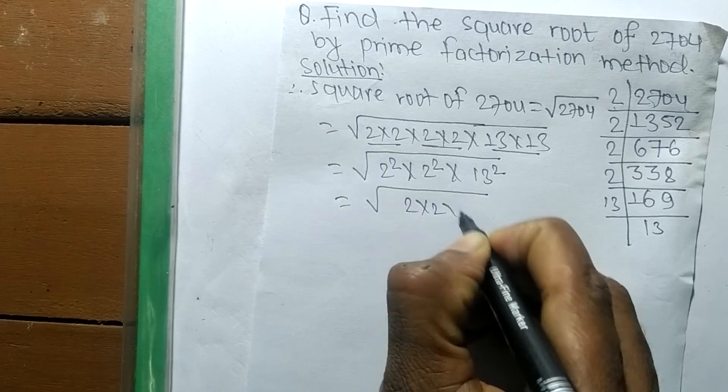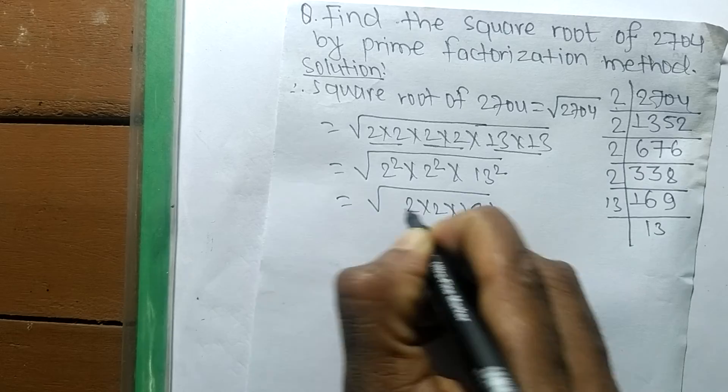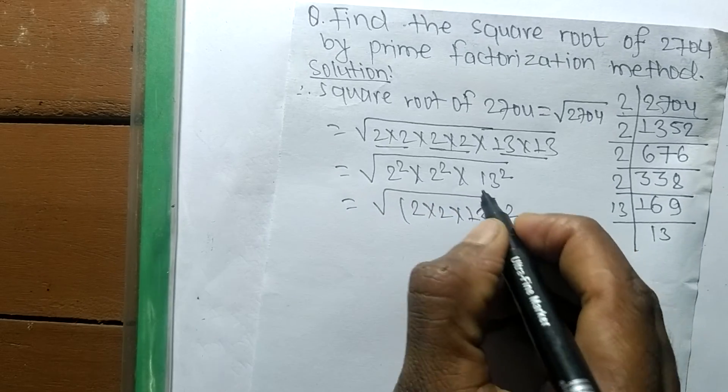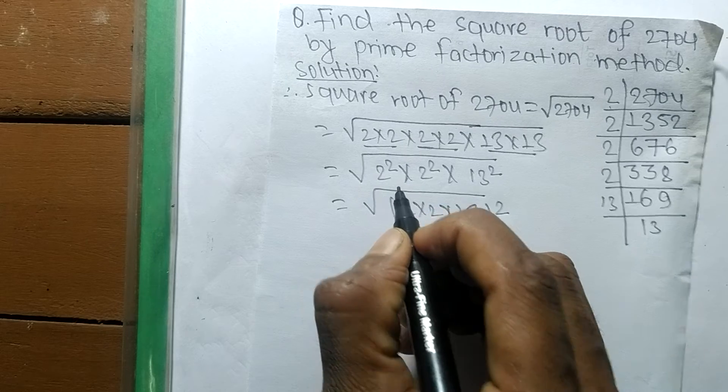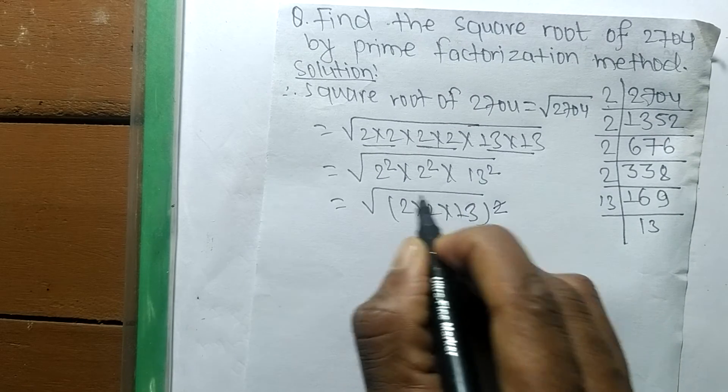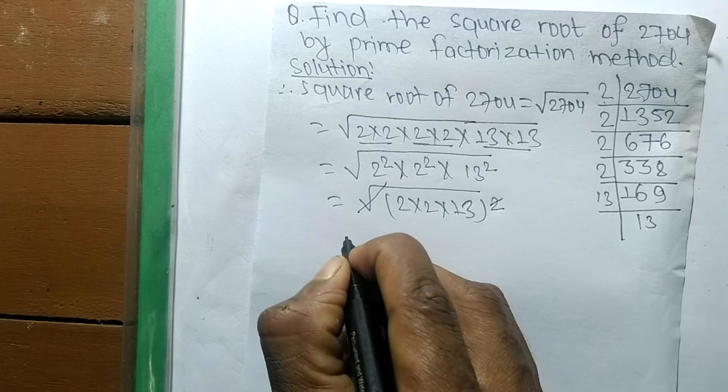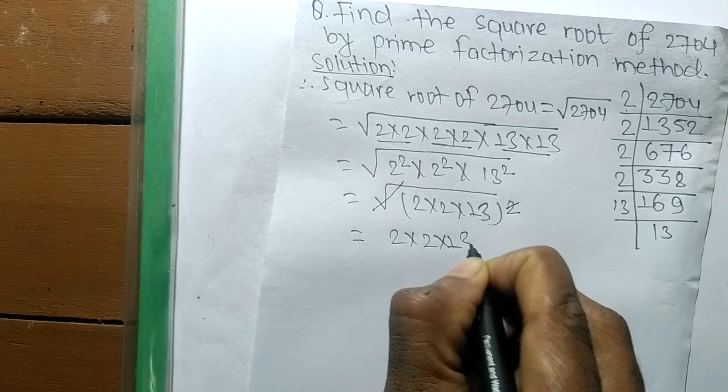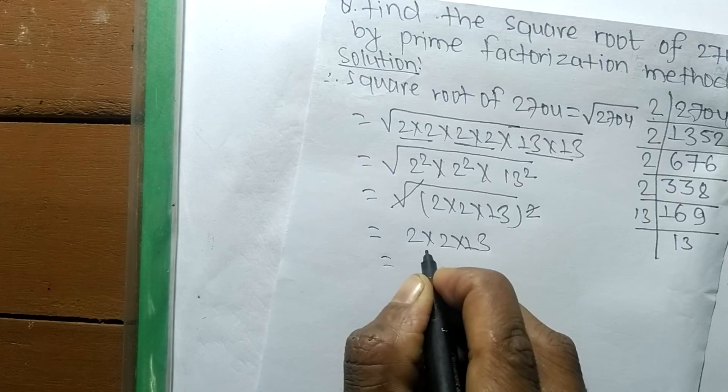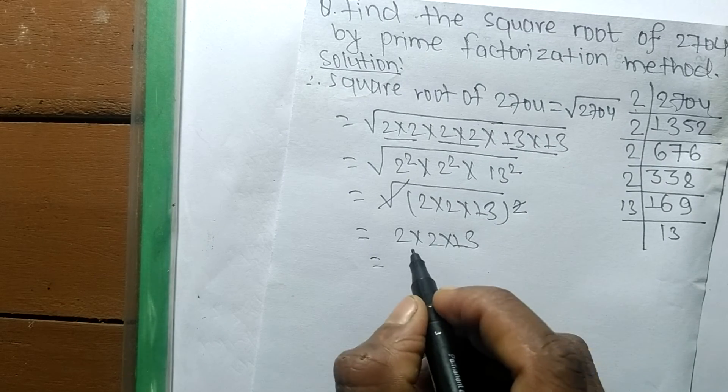A square is present in all these numbers, so we took the square as common. Now the square root and the square cancel each other, so the remaining part is 2 times 2 times 2 times 13.